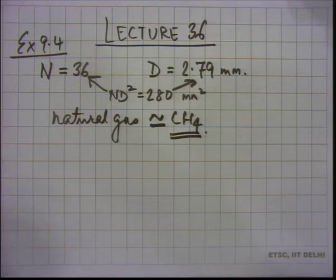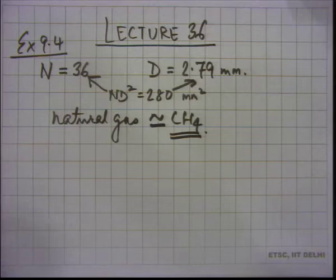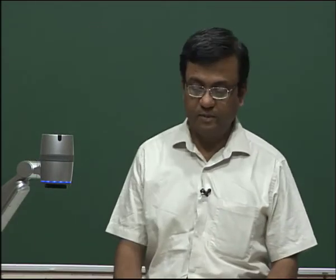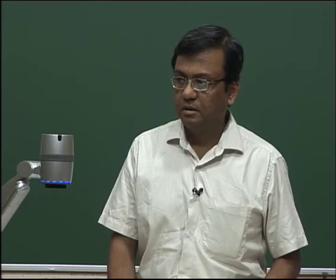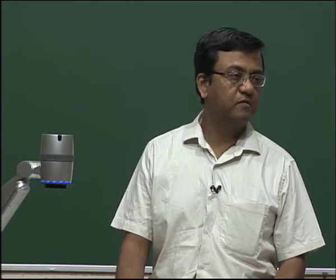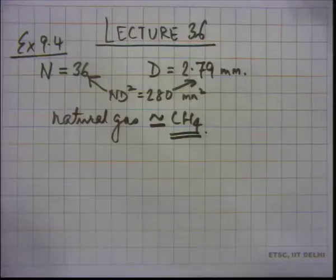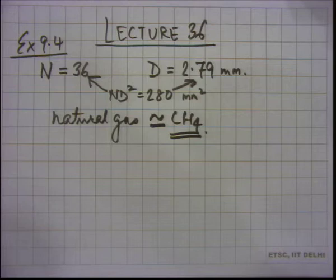Once we have the port diameter and number of ports, we need to check whether those values satisfy the constraints, particularly the flame length constraint. The flame length should not be more than 20 mm. To get the flame length, we need flow rates, because flame length is proportional to flow rate. The burner operating parameters give us 2.2 kilowatt and we have the port diameter, but we do not have flow rates yet — so we must calculate them.